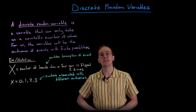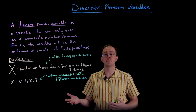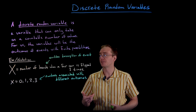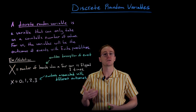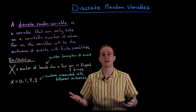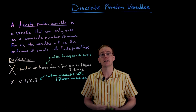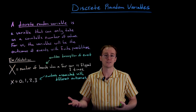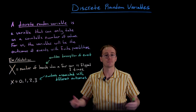There are three things we're going to focus on when working with discrete random variables: the probability of different outcomes occurring, the average or expected value we should encounter if we run these experiments a large number of times, and the variance or standard deviation of those average outcomes.